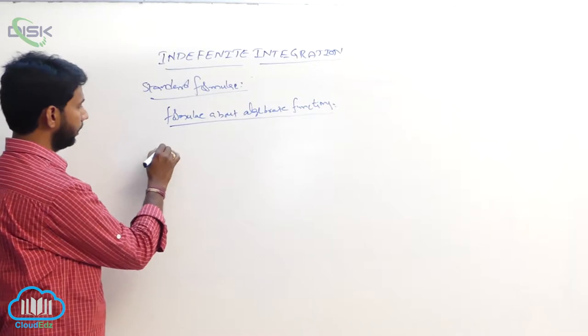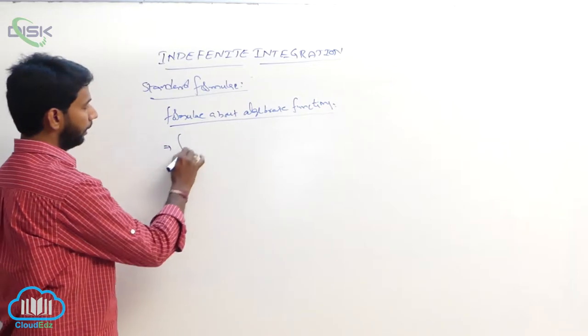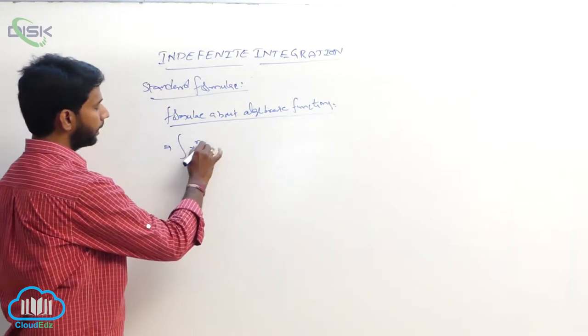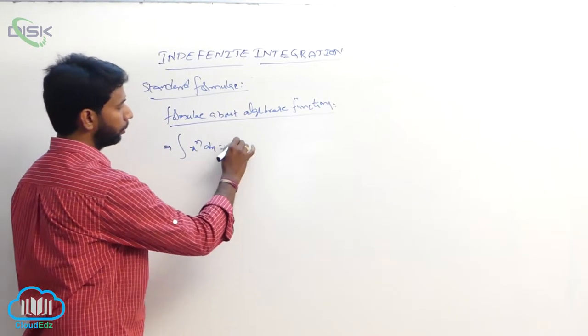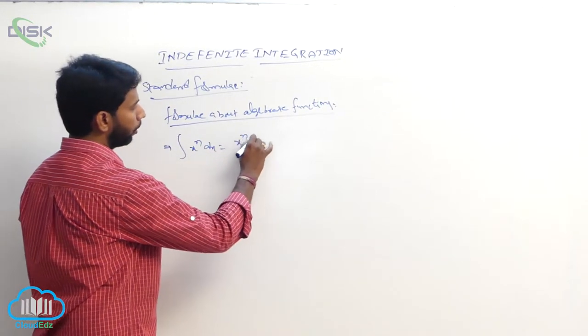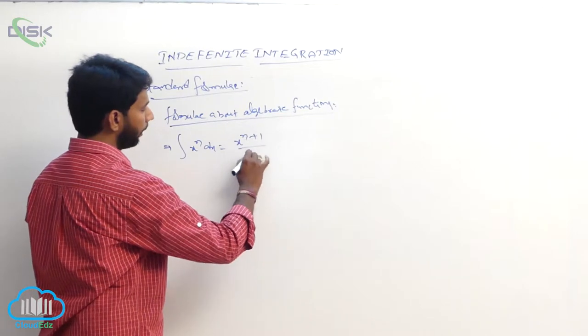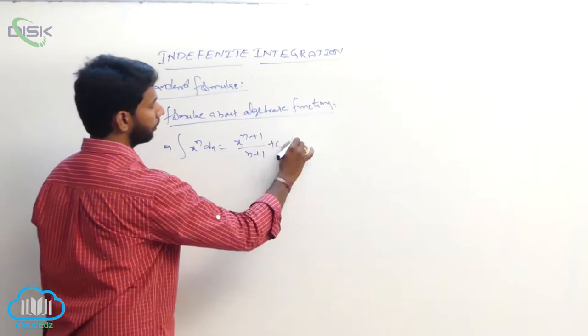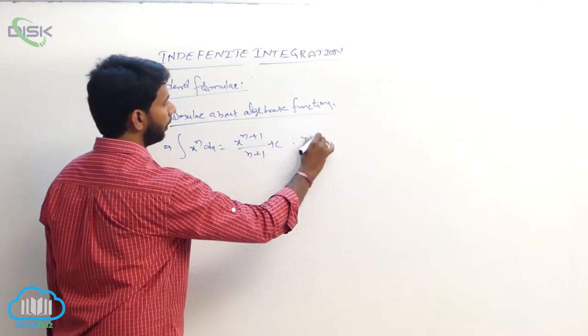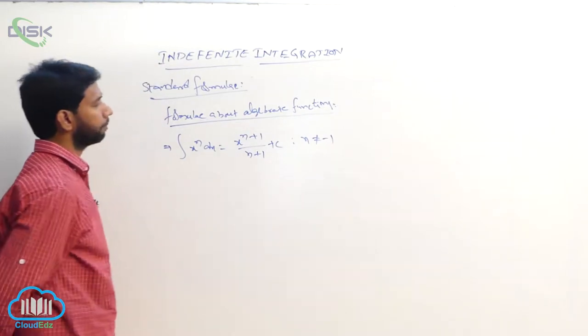The first formula is: integral of xⁿ dx equals x^(n+1) divided by (n+1) plus some constant, where n is not equal to minus 1.